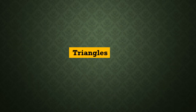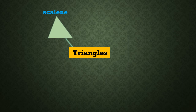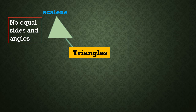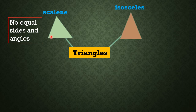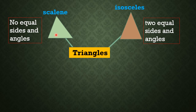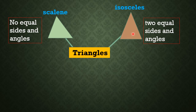Another 2D shape that you should know is a triangle. For example, the scalene triangle. The scalene triangle has no equal sides and no equal angles. This means that all three angles have different measures. Next is the isosceles triangle. An isosceles triangle has two equal sides and two equal angles. The two equal sides and the two equal angles are highlighted here. These two angles are equal.